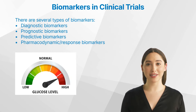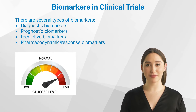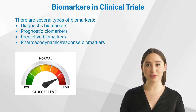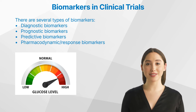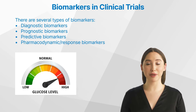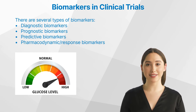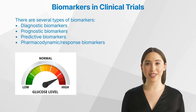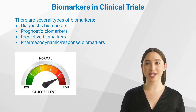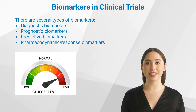Let us have a look at different types of biomarkers used in clinical trials. There are several types, each serving a specific role. Diagnostic biomarkers help in detecting if a patient has a particular disease — for example, high glucose levels in the blood can diagnose diabetes. Prognostic biomarkers give information about the likely disease course irrespective of the treatment.